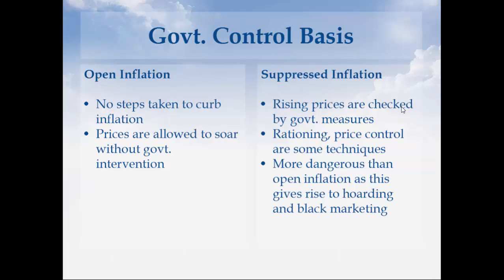First one is open inflation, where the government takes no measures to curb the price hike and prices are allowed to rise without intervention. In suppressed inflation, as the name suggests, the price hike is suppressed by government measures like rationing, price control, and subsidies. But this is considered more dangerous than open inflation, because producers are encouraged to hoard and black market goods, creating artificial demand and pushing prices even higher.